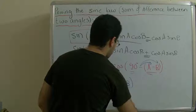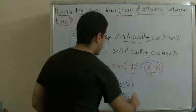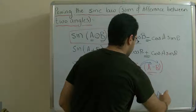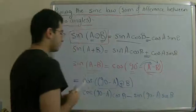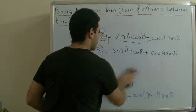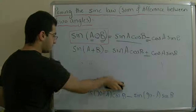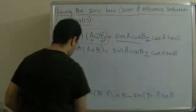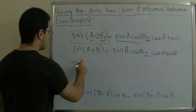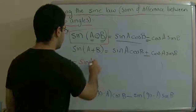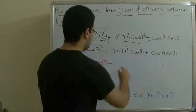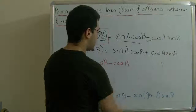Here we have a positive sign that we change into a negative sign, then minus sine(90 minus a) times sine b. So by using the rule stated at the beginning of the video, cosine(90 minus a) equals sine a. So we have sine a times cosine b, minus sine(90 minus a) which equals cosine a, then sine b.